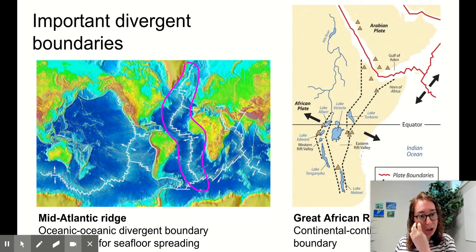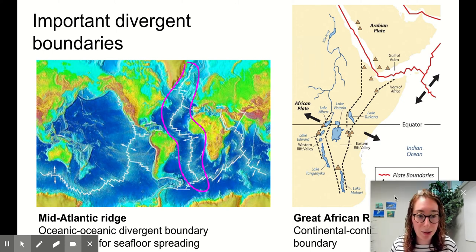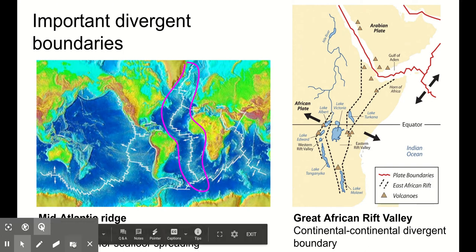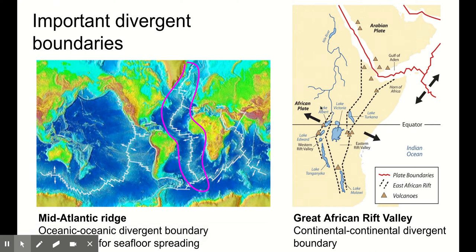Here's another important divergent plate boundary — this one's in Africa. This is called the Great African Rift Valley. This is a continental-continental divergent boundary. We've got the African plate moving one way, and this area attached to the Indian plate is being pulled over by the movement of the Indian plate. So we're probably going to see this African plate split into two smaller plates, with our divergent boundary right between the point where those two plates are moving apart.